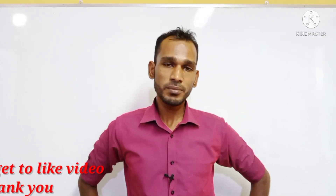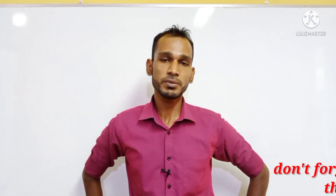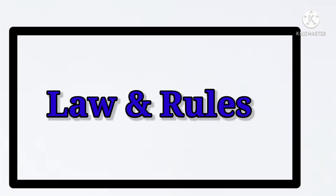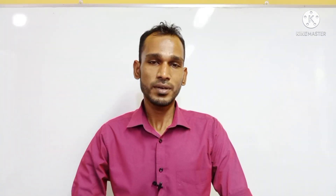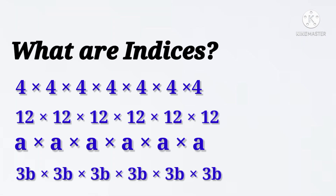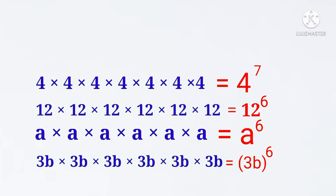In this form of questions, we will start with the knowledge of the laws and rules. First of all, what is the knowledge of the laws and rules? One number, if you want to multiply again and again, you can write it down. We will start with the index format.